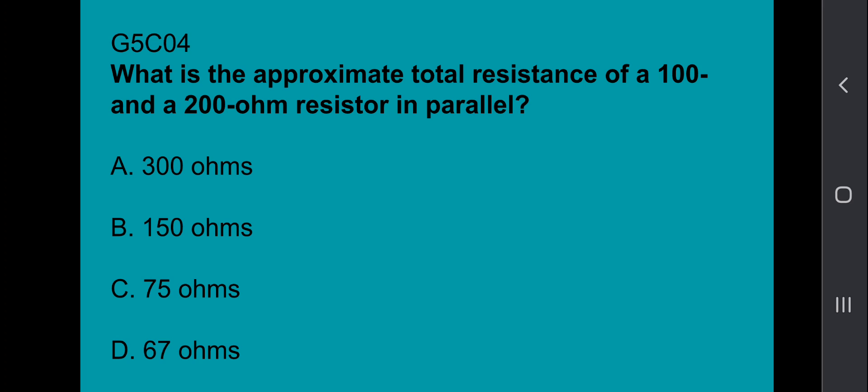G5C04: What is the approximate total resistance of a 100 and 200-ohm resistor in parallel? That's 67 ohms.